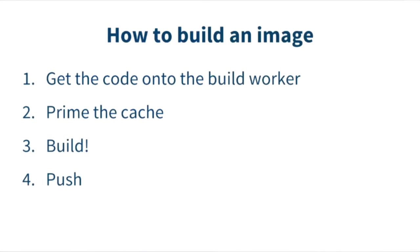Building an image in Docker is actually fairly simple. We have to get the code onto the build worker — the contents of the Git repo at the commit SHA. Priming the cache allows for faster builds — it's not strictly necessary, but it's a good optimization. We build the image, and then we push the built image to Quay itself.